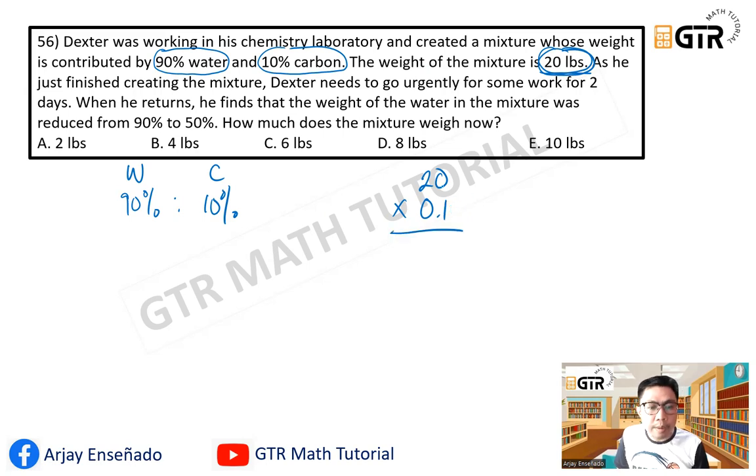So when you multiply 20 times 0.1, that's equal to 20. Then there's 1 decimal, so move it. So therefore, 10% of carbon is 2 pounds.